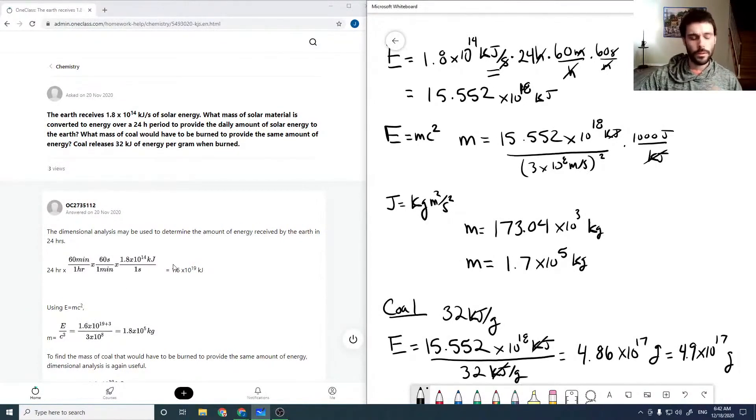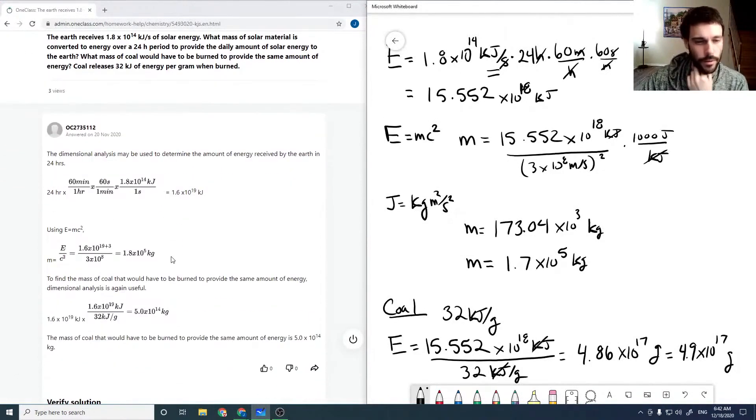Okay, so checking through the solution here, we can, as I pointed out, use the dimensional analysis. So 1.6 would be the appropriate significant figures, but again, I prefer not to round until the end. Partially just because you end up with some rounding errors at the end, like here.